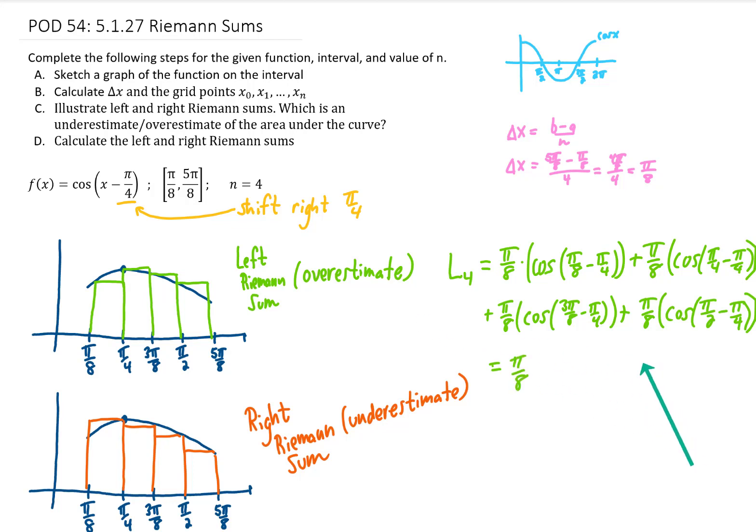Now you can see that each one of these terms has a pi over 8 on it, so we could have factored that pi over 8 out from the very beginning. And we can simplify each one of these cosine values. When I plug all of this into my calculator, I'm getting an answer of approximately 1.395993. That would be rounded to six decimal places.